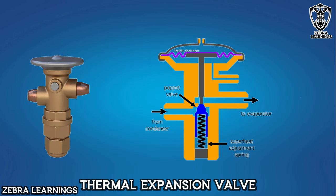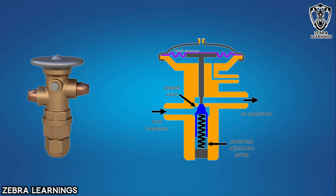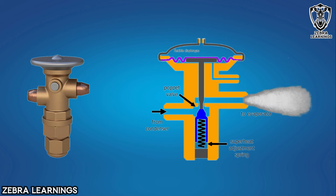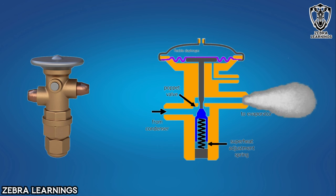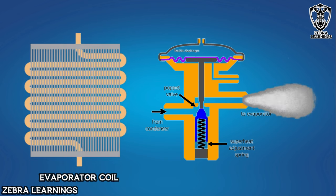The thermal expansion valve can also be a cause of evaporator coil freezing. The thermal expansion valve sends the required refrigerant to the evaporator coil. It sends more refrigerant when needed and less refrigerant when not needed. If the thermal expansion valve does not close properly, it will send too much refrigerant to the evaporator coil. So, the evaporator coil gets overcooled and freezes.